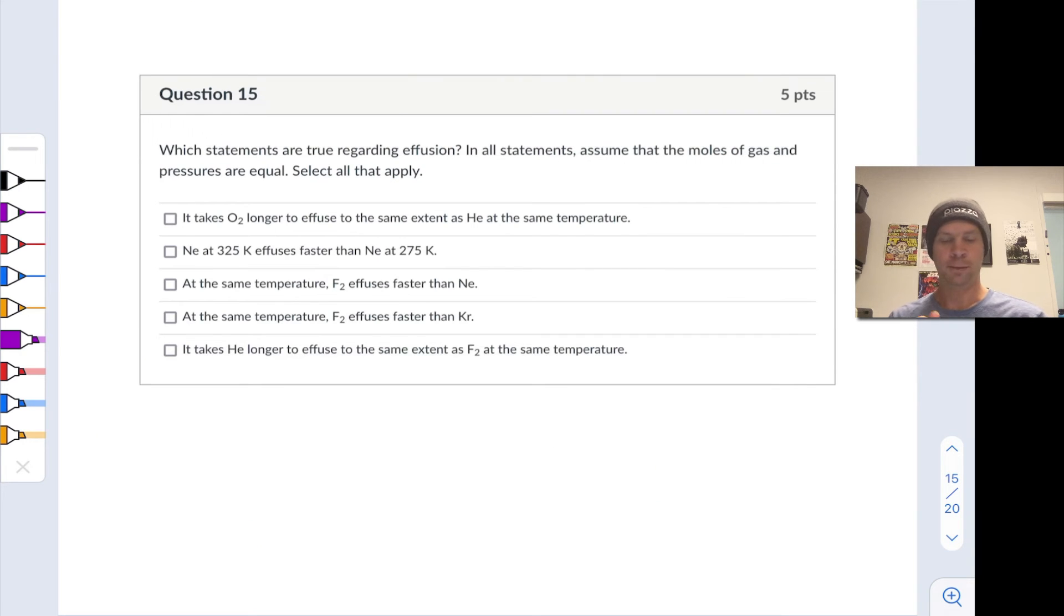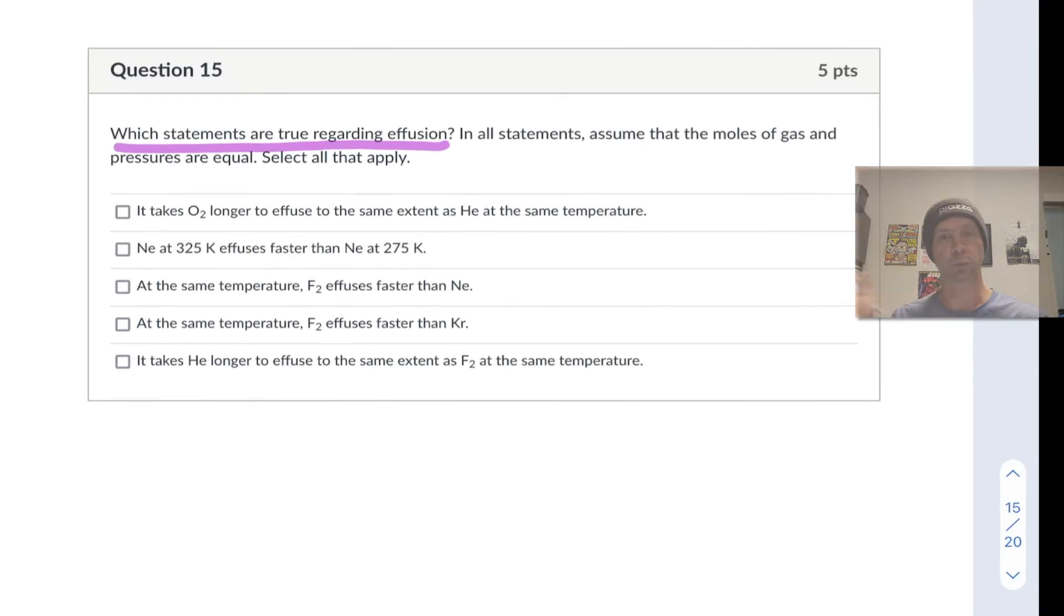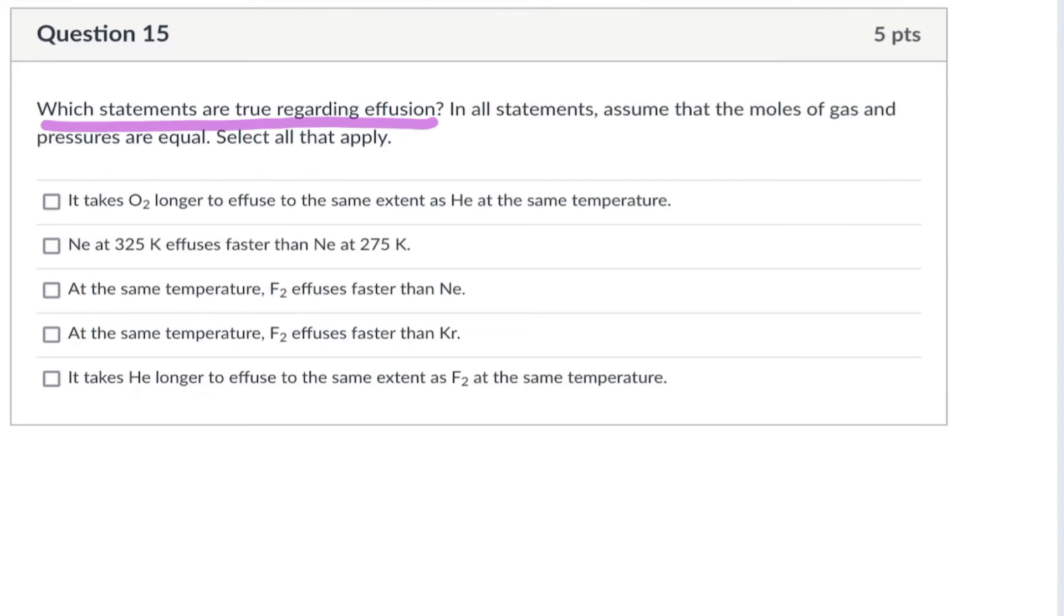This problem is all about effusion, and we're asked to select which statements are true. In all statements, assume that the moles of gas and pressures are equal. So if we're ever comparing two gases, we're going to assume that the moles of gas and their pressures are equal, these two variables potentially affecting effusion. We want to sort of take them off the table. All right, so let's go through each statement one by one and decide whether it's true or false.